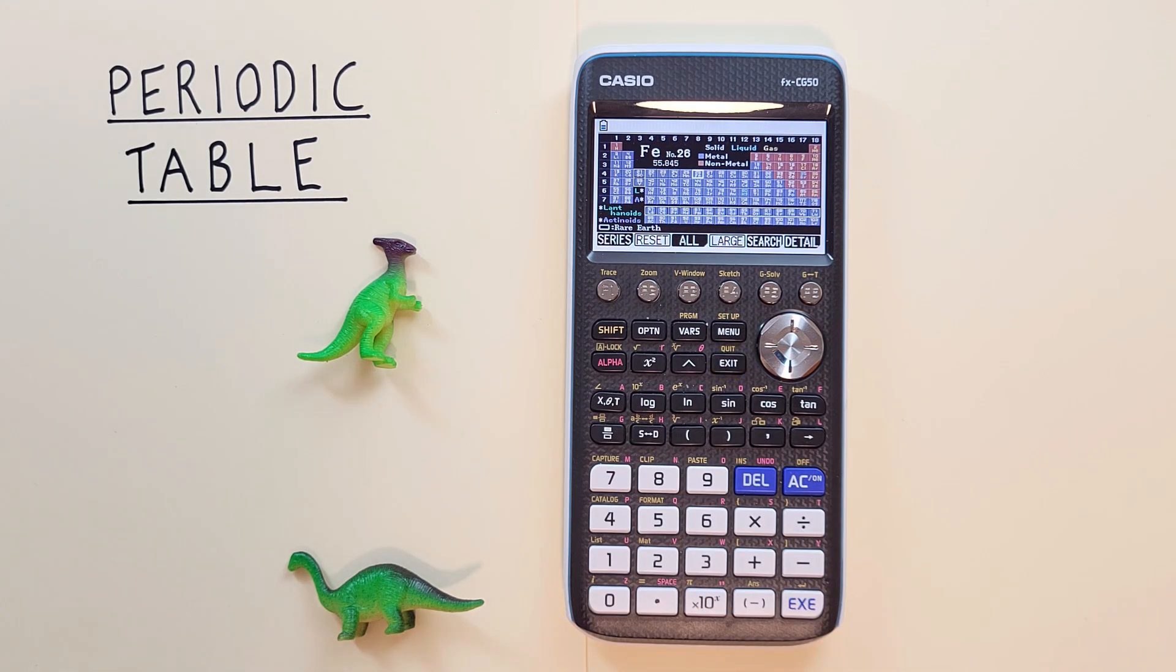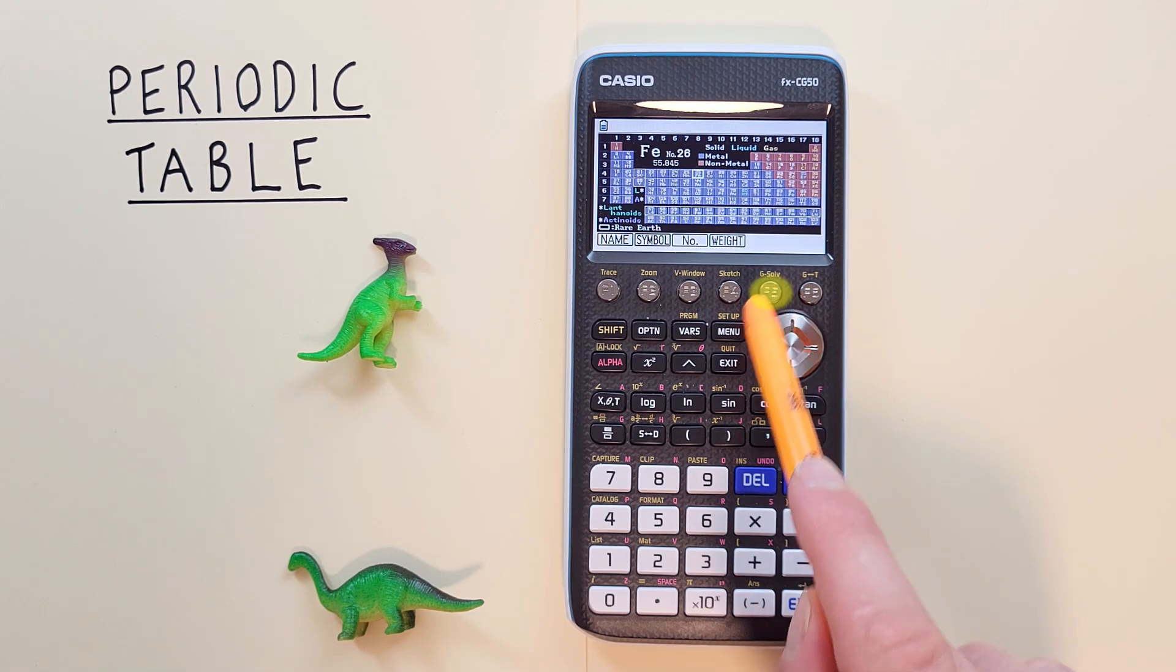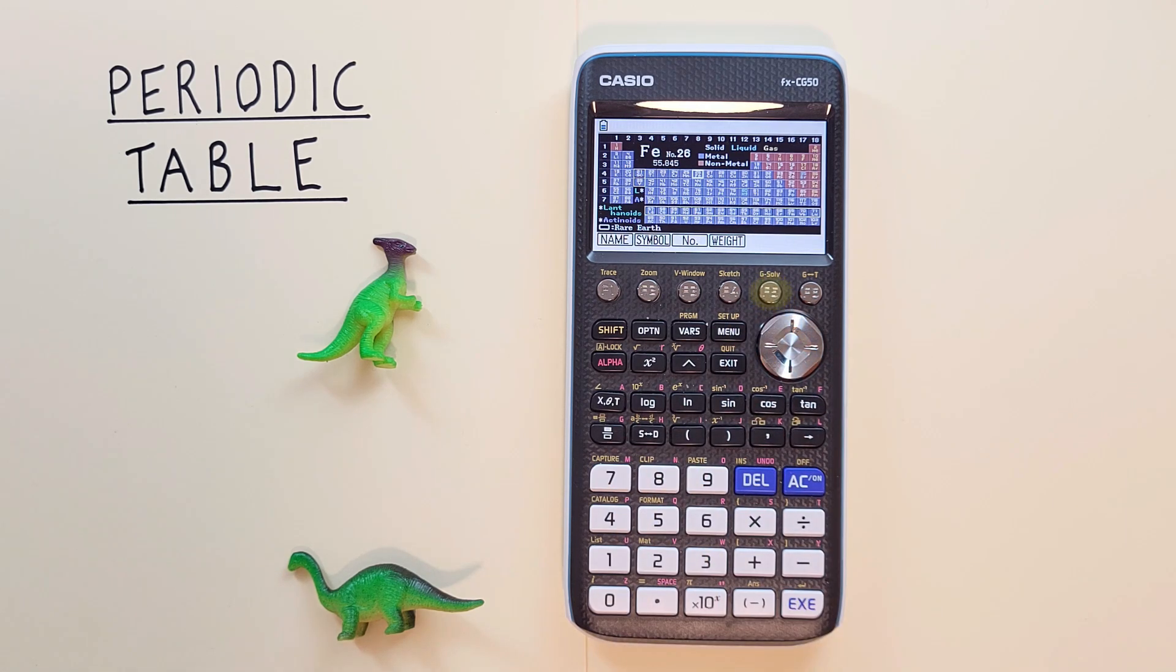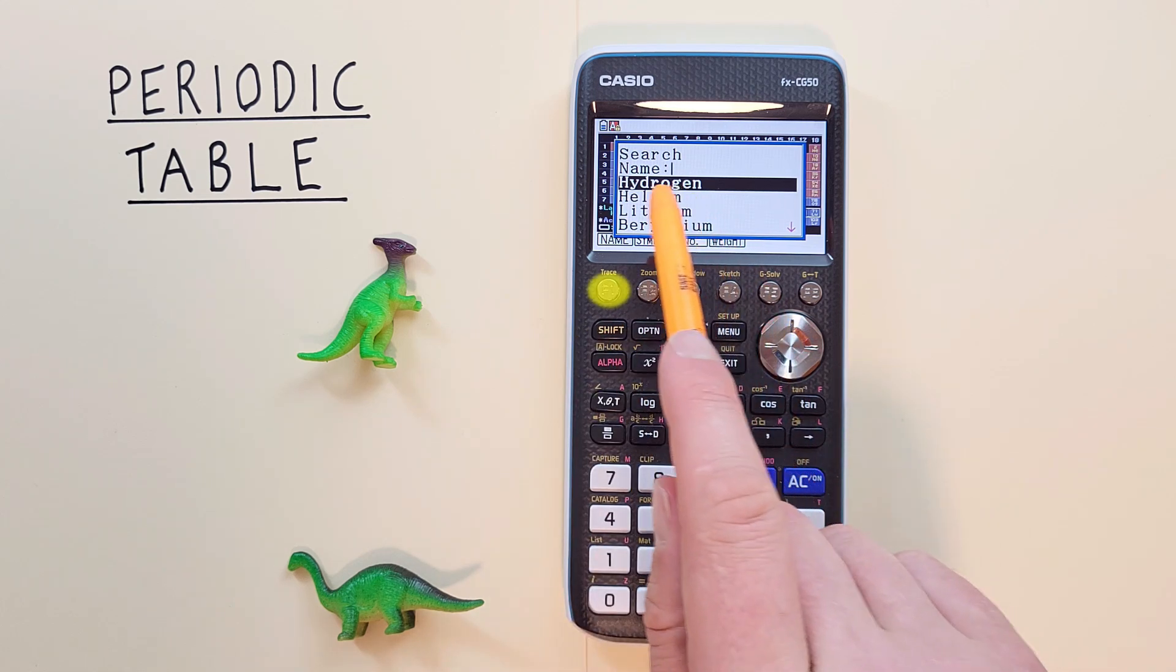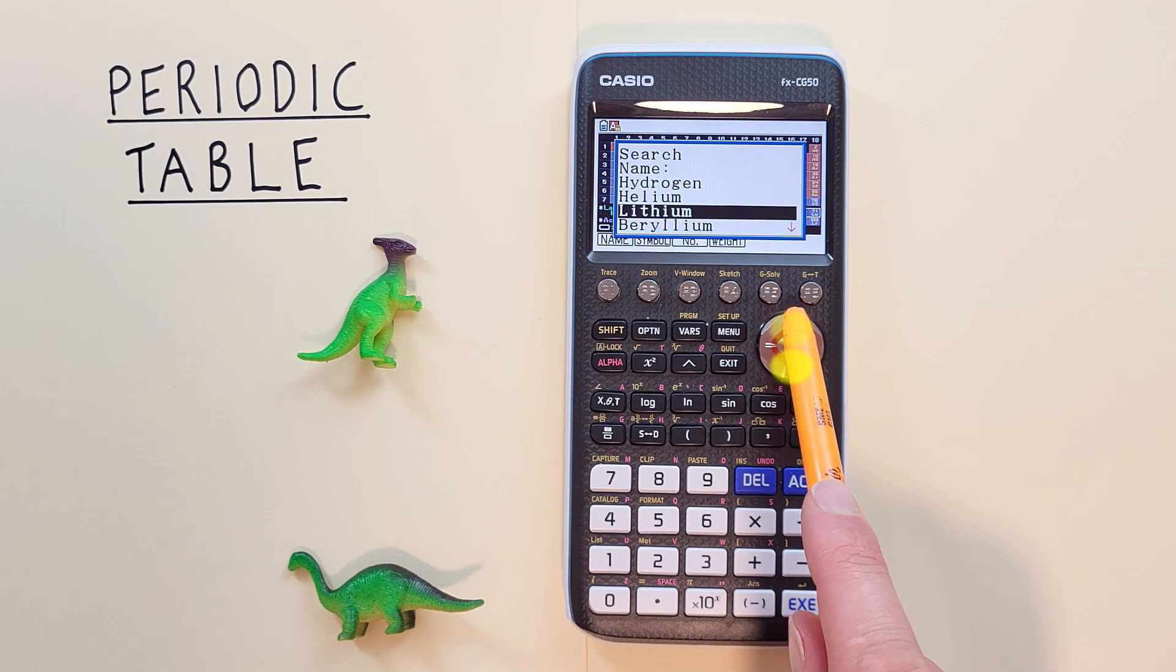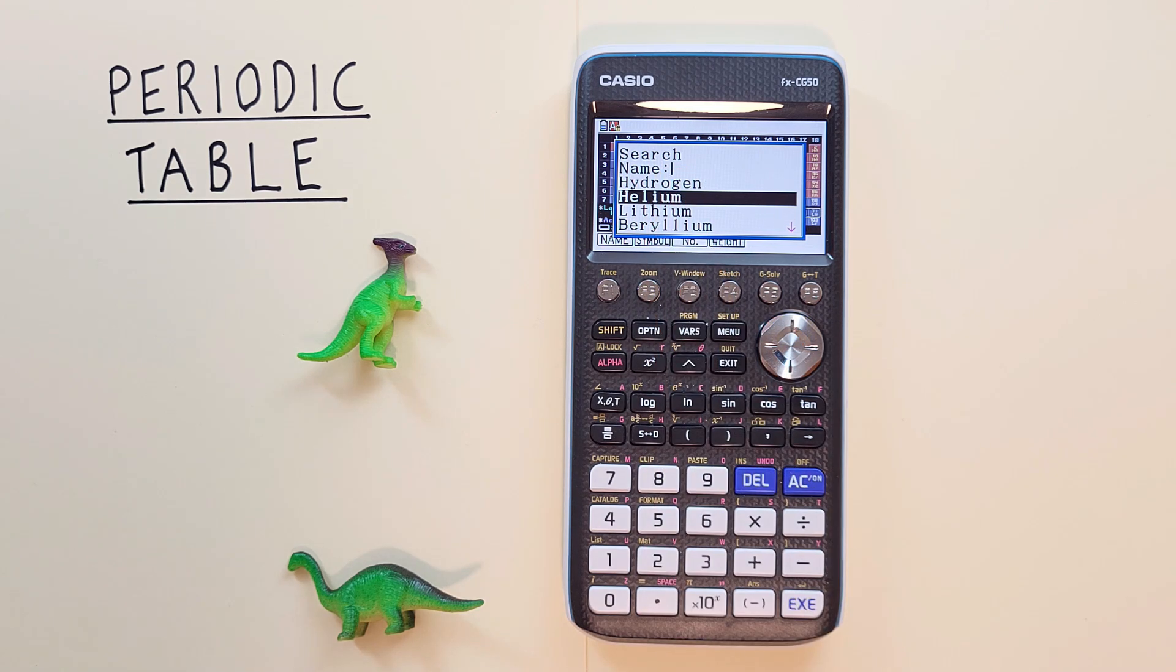We can also search on this menu based on a number of different features with the F5 key here. So we see F1, name. We can scroll through our different elements, or we can enter it here. So let's find gold.